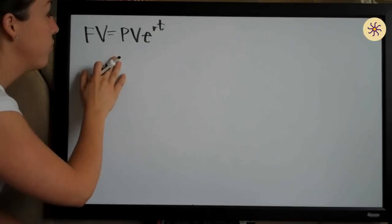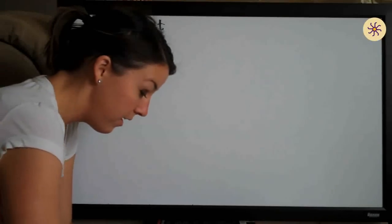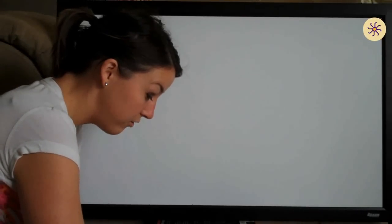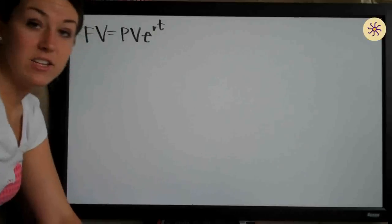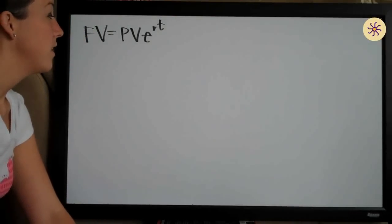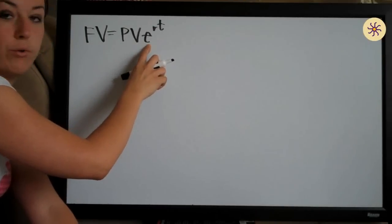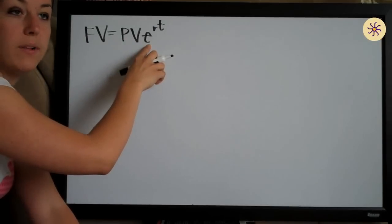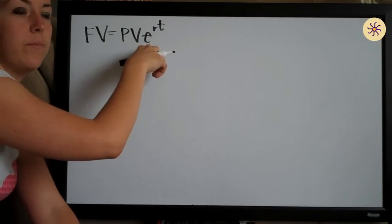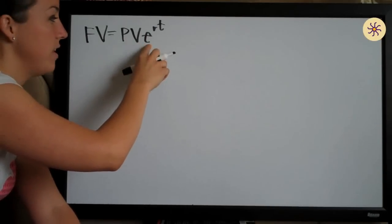The reason we know we're using this formula is because they ask us to assume that the interest is compounded continuously, and whenever you see continuously compounded interest, you use the formula with E as opposed to (1 + R/N)^(NT).